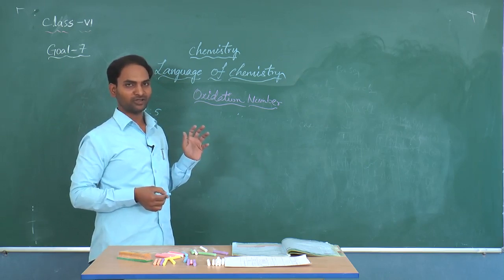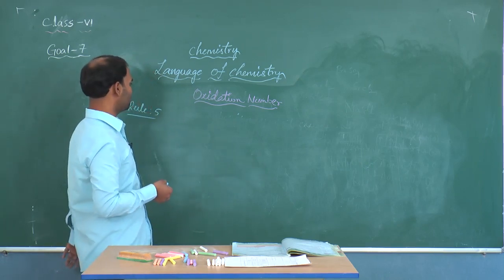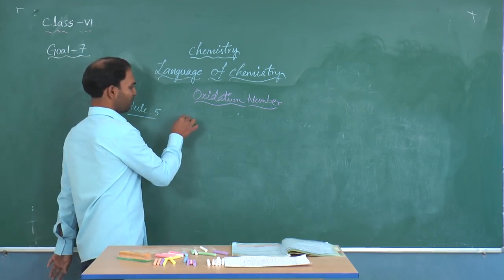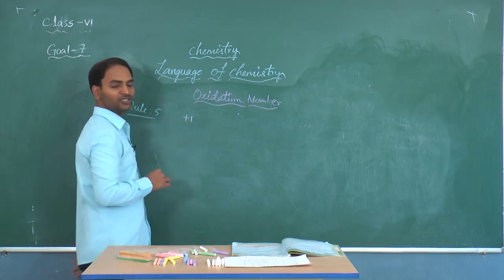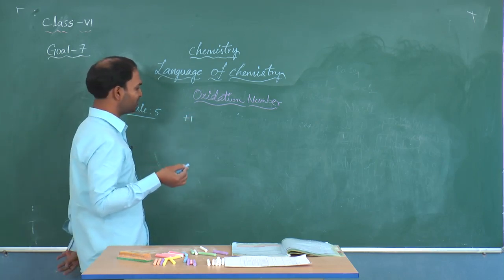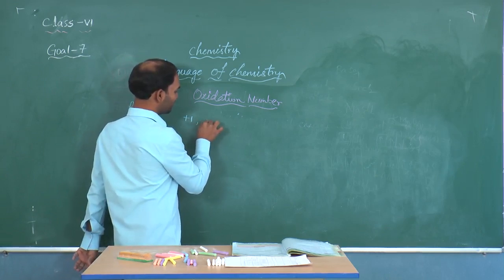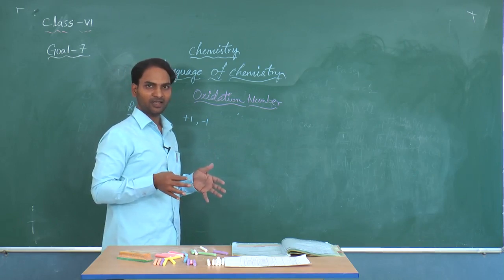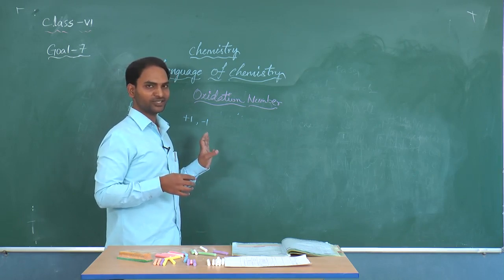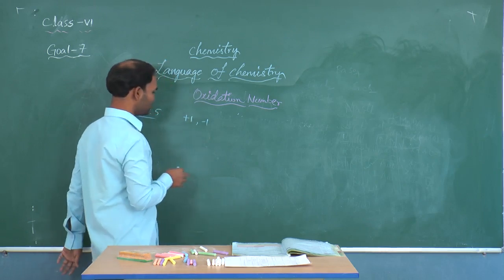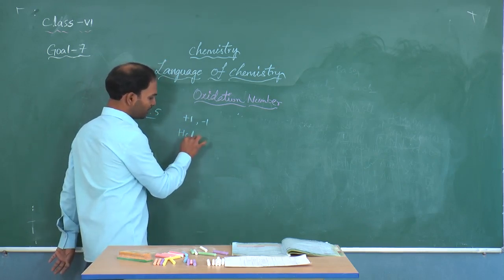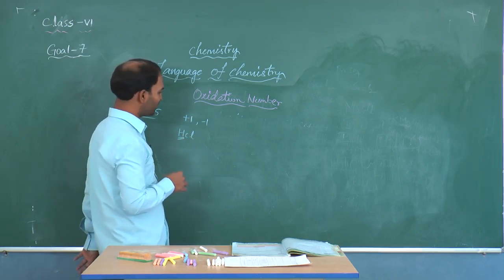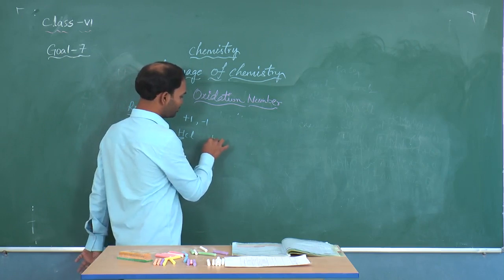In the case of Rule 5, you have to know about hydrogen. Hydrogen exhibits a +1 oxidation state in most cases. The exception is in the case of metal hydrides, where it exhibits a -1 oxidation state. Other than metal hydrides, hydrogen is going to exhibit +1 oxidation state. For example, take HCl — in HCl, hydrogen exhibits +1 oxidation state.